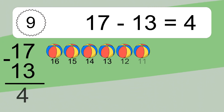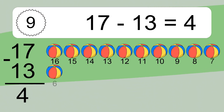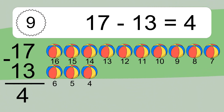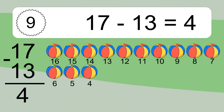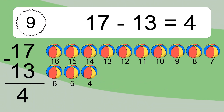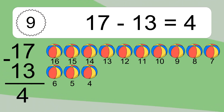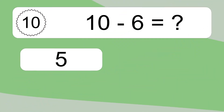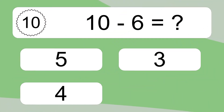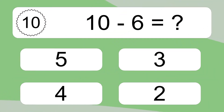17 minus 13 equals what? 17 minus 13 equals 4. Let's count it: 16, 15, 14, 13, 12, 11, 10, 9, 8, 7, 6, 5, 4.